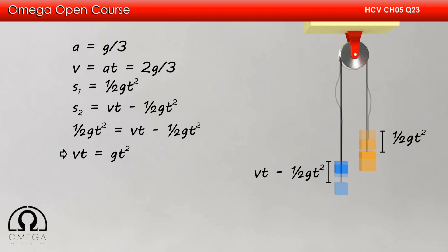Simplifying, we get vt = gt². Putting the value of v, we get (2g/3)t = gt², or t = 2/3 seconds. This is our answer.